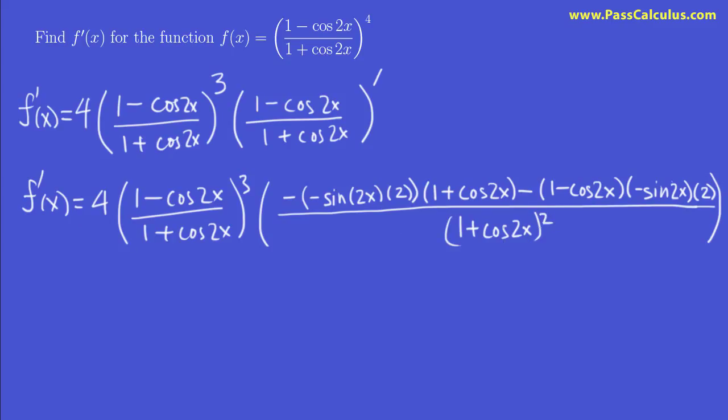And I'm going to stop there. We could try to simplify that. Notice we have 1 plus cos 2x cubed on the bottom. And 1 plus cos 2x squared. We could write this all over 1 plus cos 2x to the power of 5, therefore.